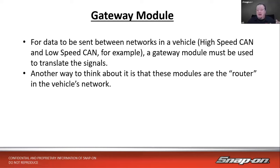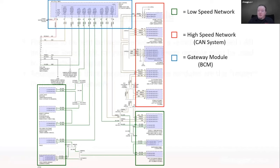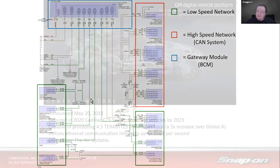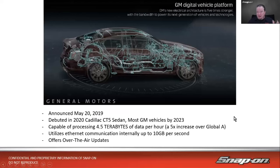For data to be sent between different networks on a vehicle — high-speed CAN, low-speed CAN, CAN FD, etc. — you need a gateway module. There may be multiple gateway modules on a vehicle; refer to the manufacturer's wiring diagram. Think of these modules as the router on the vehicle's network. For example, on an Impala, modules in the red box are on the high-speed network, green boxes on low-speed, and the body control module translates between them.